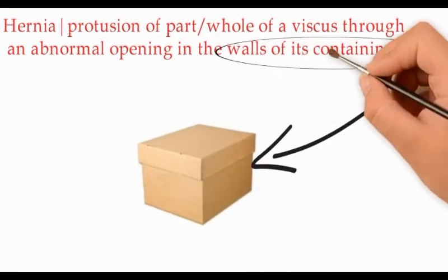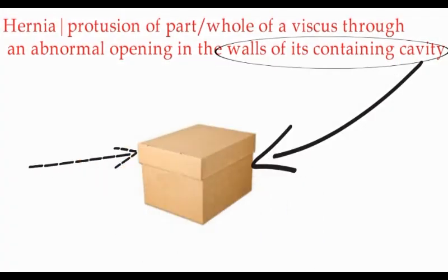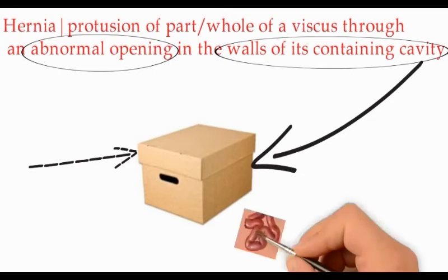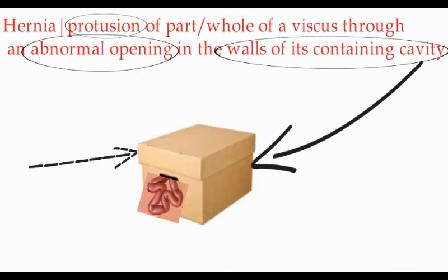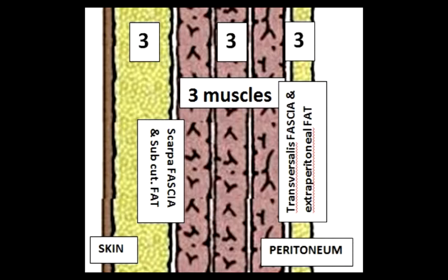The empty space in the box is the cavity, the normal opening is the lid, and this is the abnormal opening. Protrusion of a viscus through the opening is a hernia. The definition of a hernia is protrusion of part or whole of a viscus through an abnormal opening in the walls of its containing cavity.